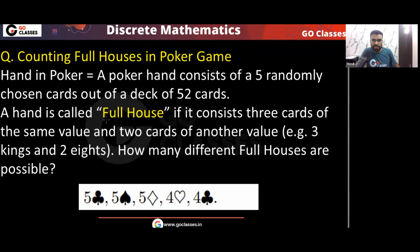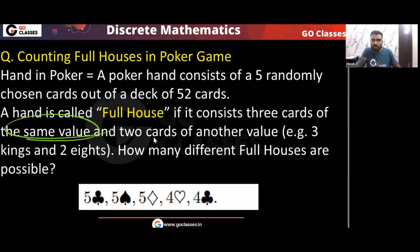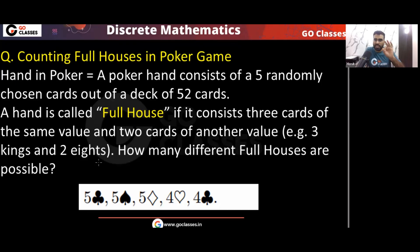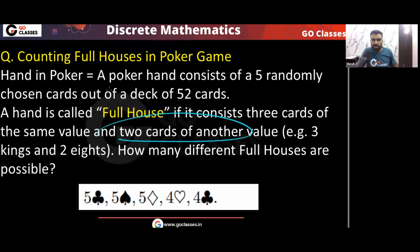Now the definition of full house: these 5 cards that you got — when can we call them a full house? A hand is called a full house if it consists of 3 cards of the same value and 2 cards of another same value. So full house means 3 cards of one value and 2 cards of a different value.